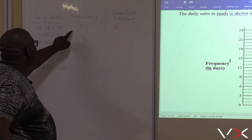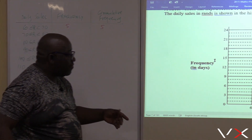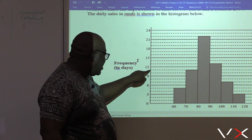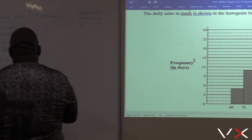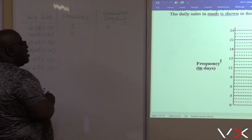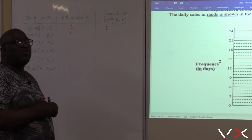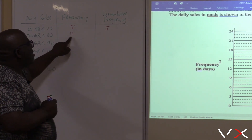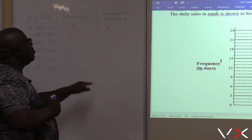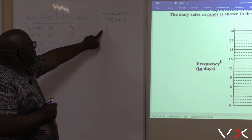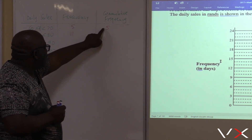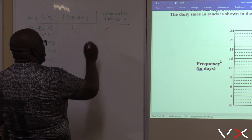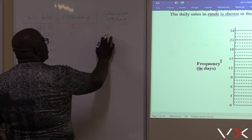Between 70 and 80 — what is the frequency? You go to your graph and check between 70 and 80. You read off: this is 9, 10, 11, just before 12. So between 70 and 80, it is 11. Now, what is the cumulative frequency? You calculate all the frequencies that you have. The first cumulative frequency was 5, and the frequency now is 11. So you add 11 and 5 to get 16. Our cumulative frequency in this particular case is 16.